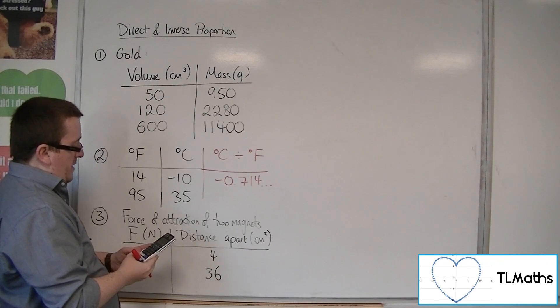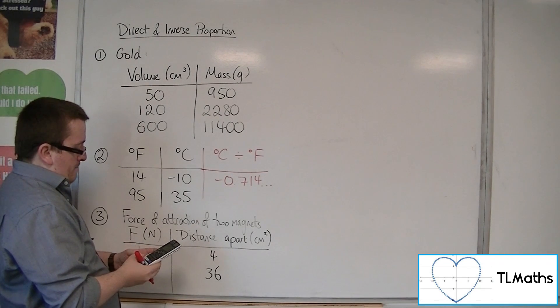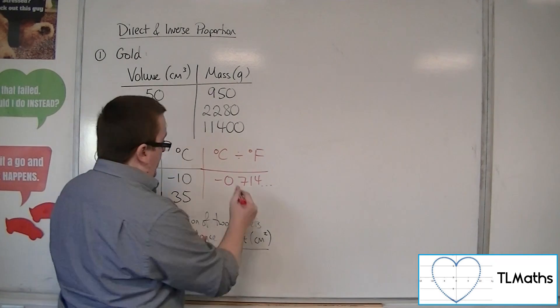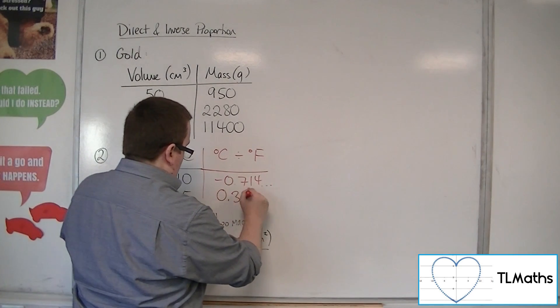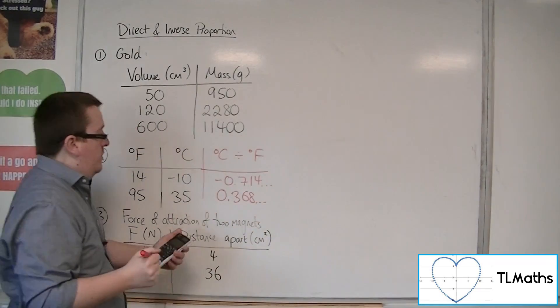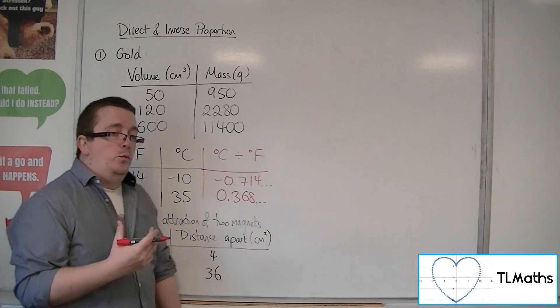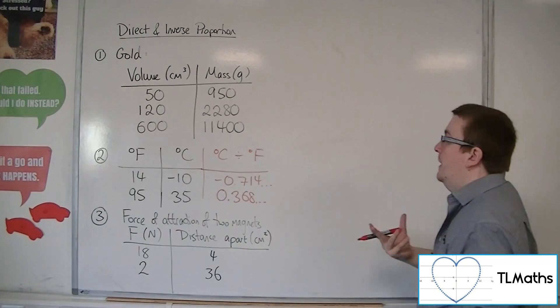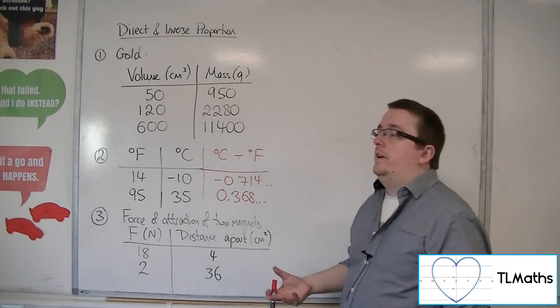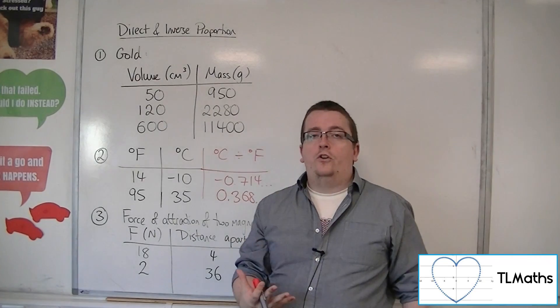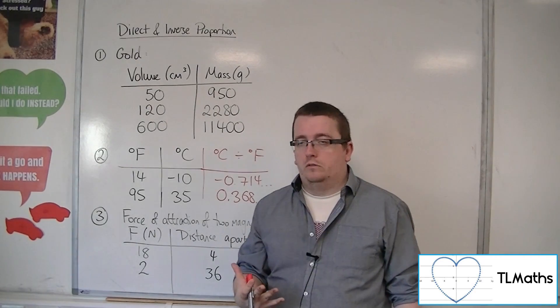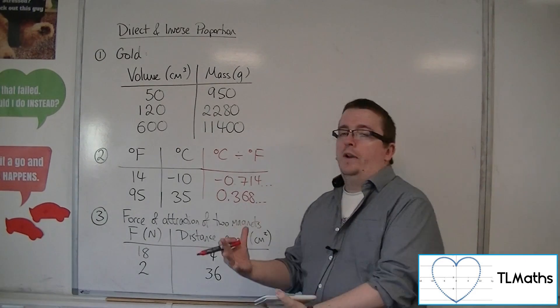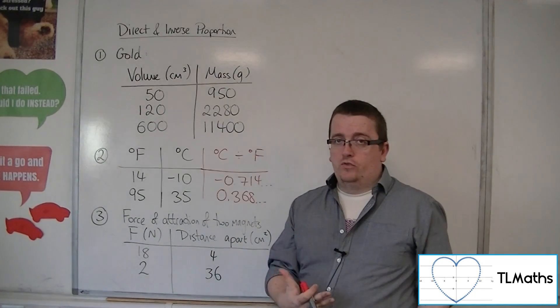And then we've got 35 divided by 95. The fact that one is going to be negative, one is going to be positive, should show it immediately. So 0.368. The fact that we're getting different values here is showing us that Fahrenheit and Celsius are not directly proportional. Now, it is true that as one increases, the other increases.